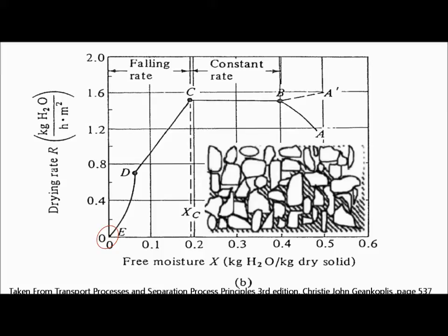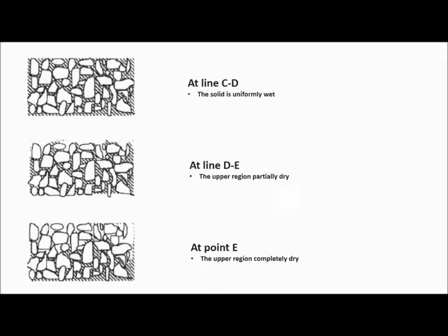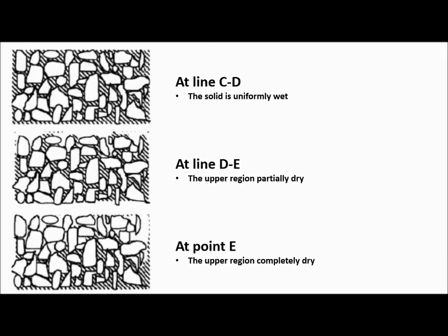Internal diffusion of moisture dominantly controls the drying rate now, instead of external mass transfer during constant drying period. Depending on the type of material dried, sometimes both stages of falling rate occur gradually and cannot be differentiated easily as shown in this plot here.